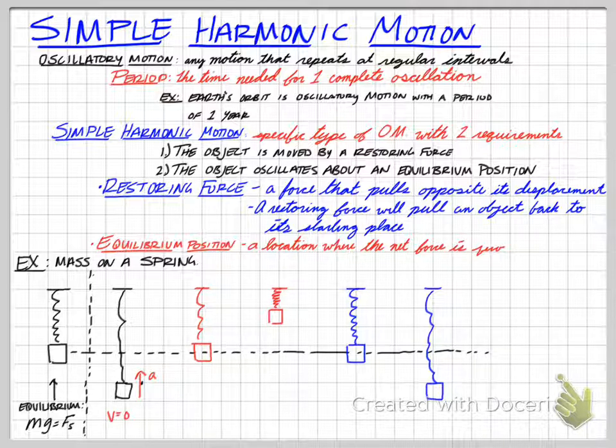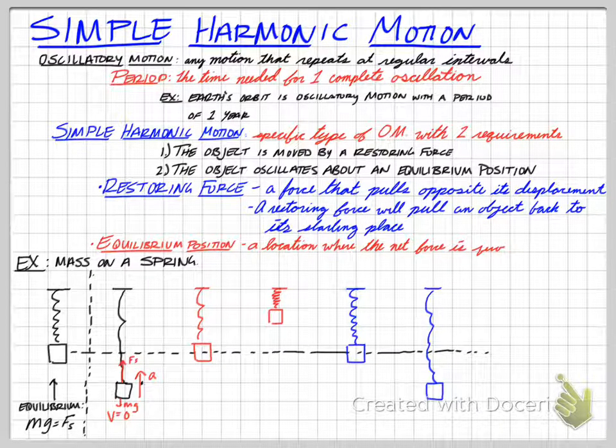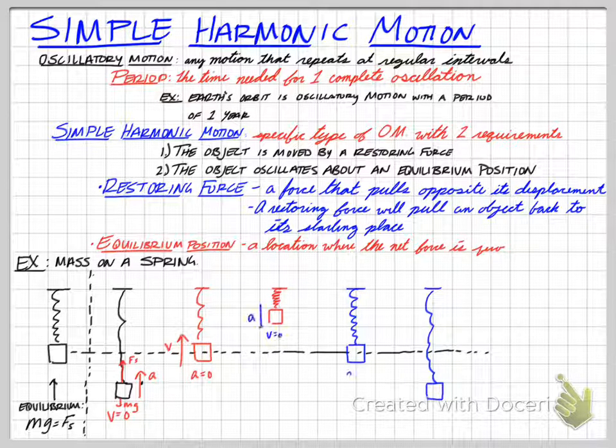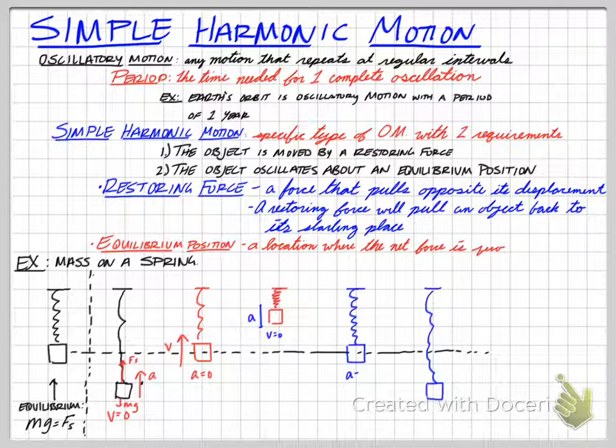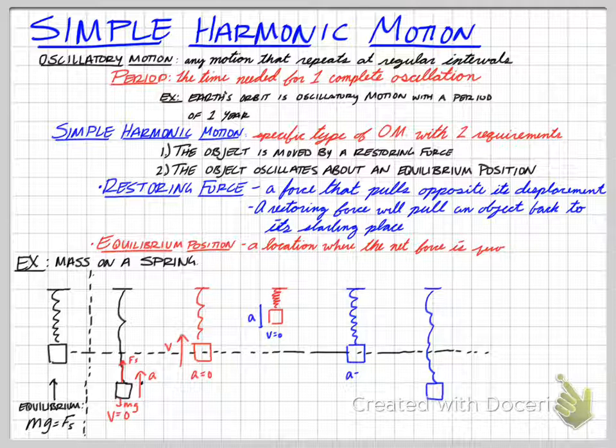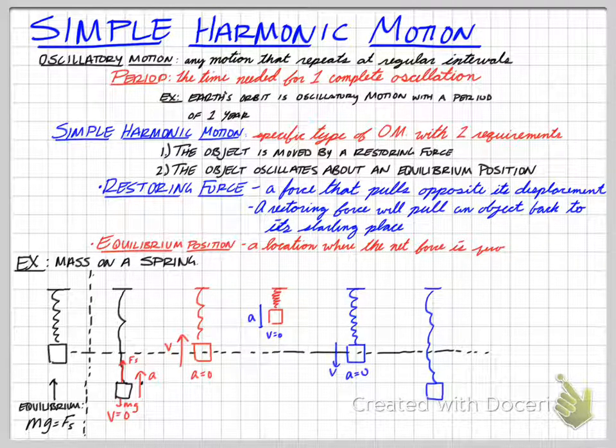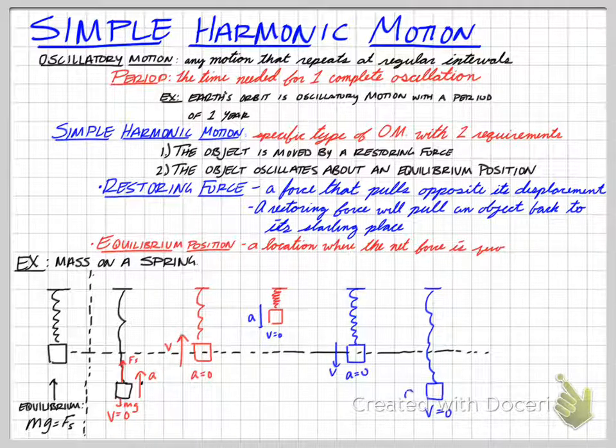Now, as the thing moves up, we get to that equilibrium position. And my velocity is up at that point. And then, the next spot we get up to, the velocity is now zero, and the acceleration is down, because it's about to head down. Then we get back to equilibrium again, where the acceleration is zero, and my velocity is down. Then we make it to the bottom, where the velocity is zero, and my acceleration is up.